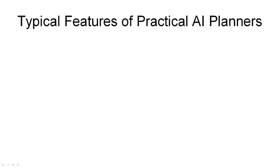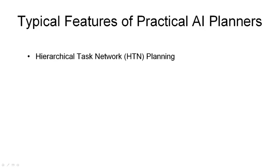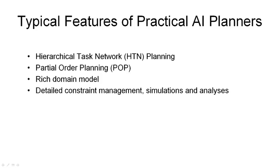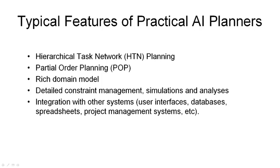Let me draw your attention to a number of features which are typical of practical AI planners. Often these are based on hierarchical task network planning at an outer layer, and they often allow for partial ordering of the resulting plans rather than insisting plans are fully ordered. They often include a rich domain model and can manage many types of constraints, including links to simulations and analyses to refine and restrict the plans. These planners often allow for integration with other systems — user interfaces, databases, spreadsheets, project management, and corporate systems of various kinds. This integration is very typical of practical planners and often much of the effort in a practical planning application goes into it.